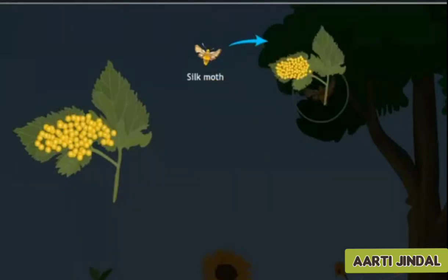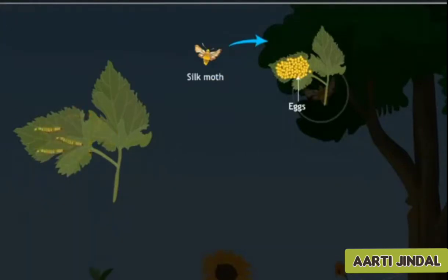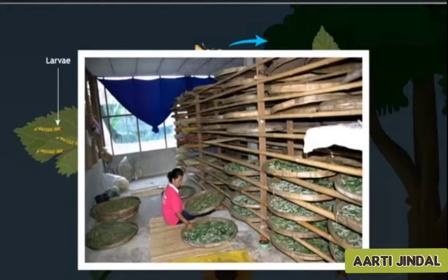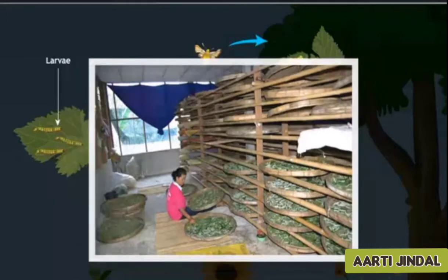The eggs are sorted under hygienic conditions at the required temperature and pressure for the larva to hatch. When the larva hatch, they are placed in clean bamboo trays where they are provided with mulberry leaves.